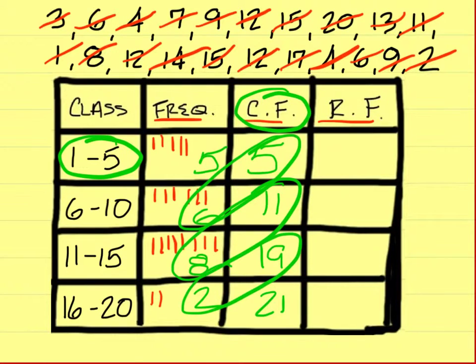And what's the last one? Twenty-one, because you add the two and the nineteen. Now that's what we did before, but out here you have RF, and that stands for relative frequency. And the relative frequency is found by doing this: first you need to know how many items you have all together. How many numbers do we have all together?